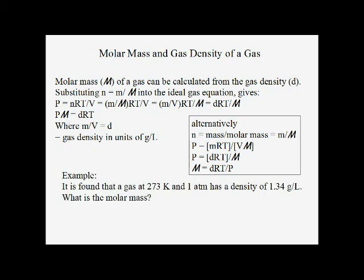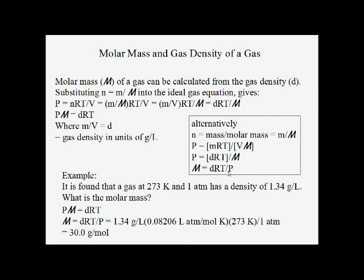For example, if a gas at 273 Kelvin and 1 atmosphere has a density of 1.34 grams per liter, what is its molar mass? We solve for molar mass: molar mass equals density times the gas constant times temperature divided by pressure. Making sure the units cancel properly, we run the numbers through and end up with 30.0 grams per mole.